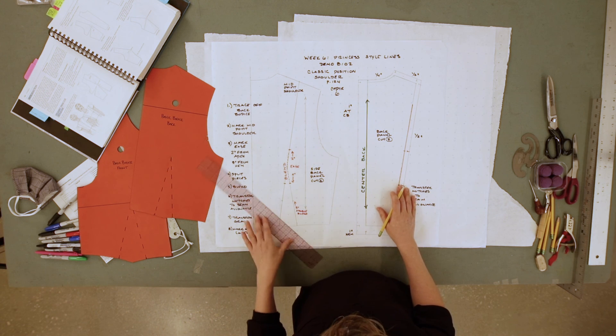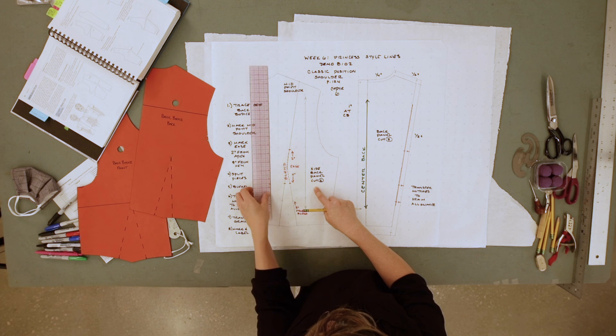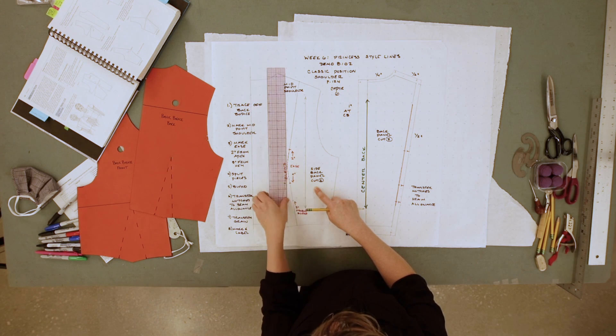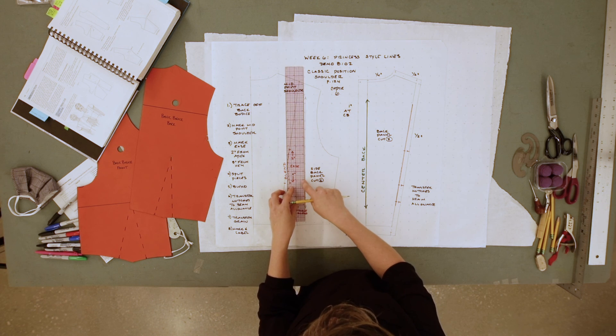The grain line for this one, for the side back panel, we're going to transfer from our center back by copying that using your grain, your graph ruler.